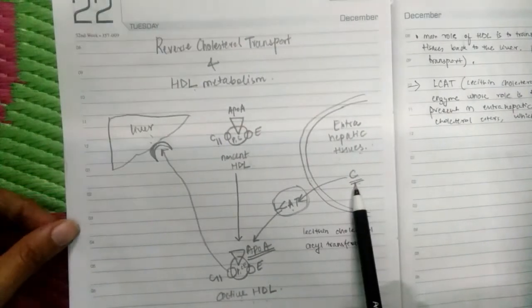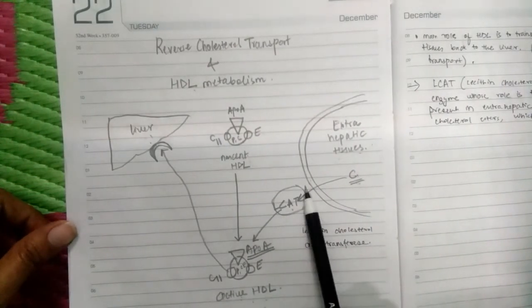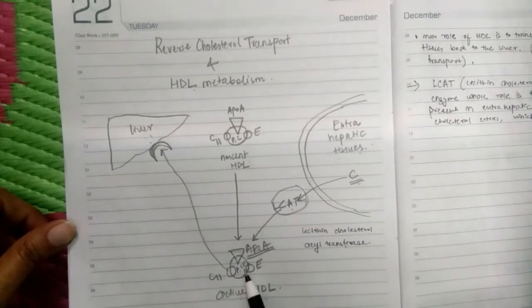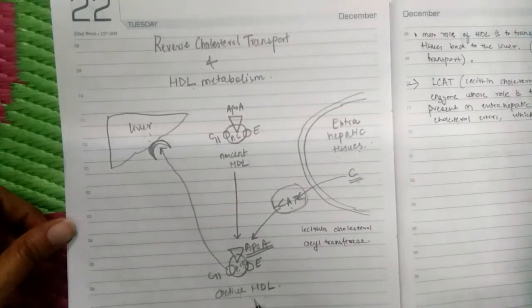We can see in this diagram that this is the free cholesterol present in the extra hepatic tissues. This is catalyzed by the LCAT enzyme, converted to cholesterol esters which is taken up by the HDL molecule. Nascent HDL will take up the cholesterol esters and form active HDL molecule.